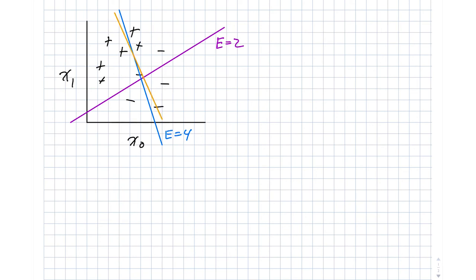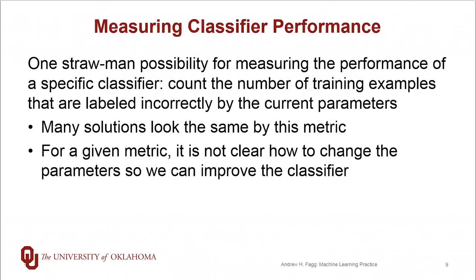So in this particular case, it misclassifies the same one. So it misclassifies this one, this one, this one, and this one down here. So in this case, error is also equal to 4. So this illustrates one of the points about this particular error metric in that there are different parameterizations of our function that give us exactly the same error values.